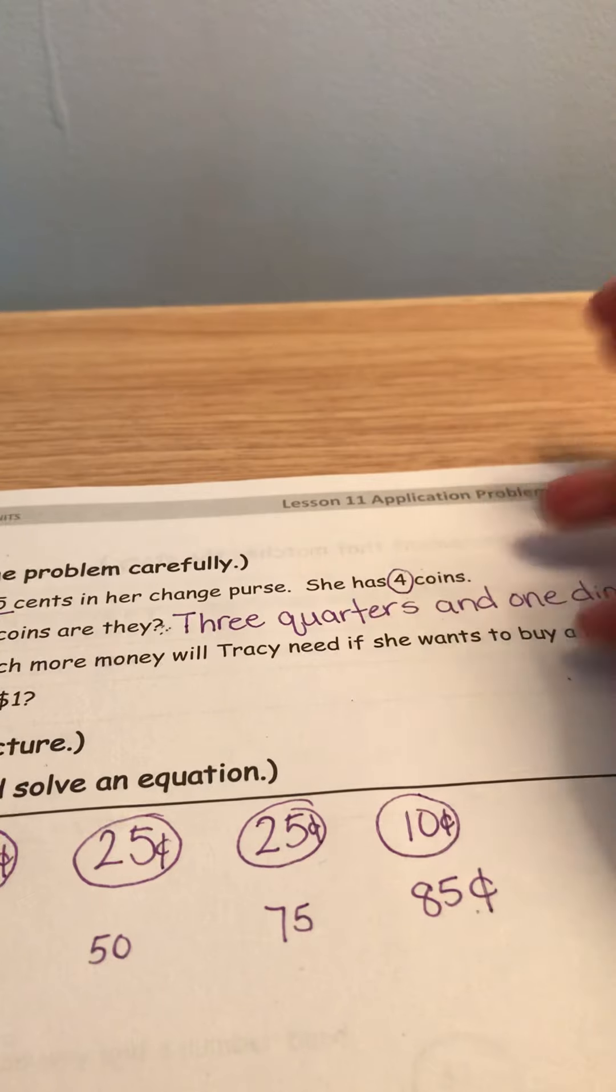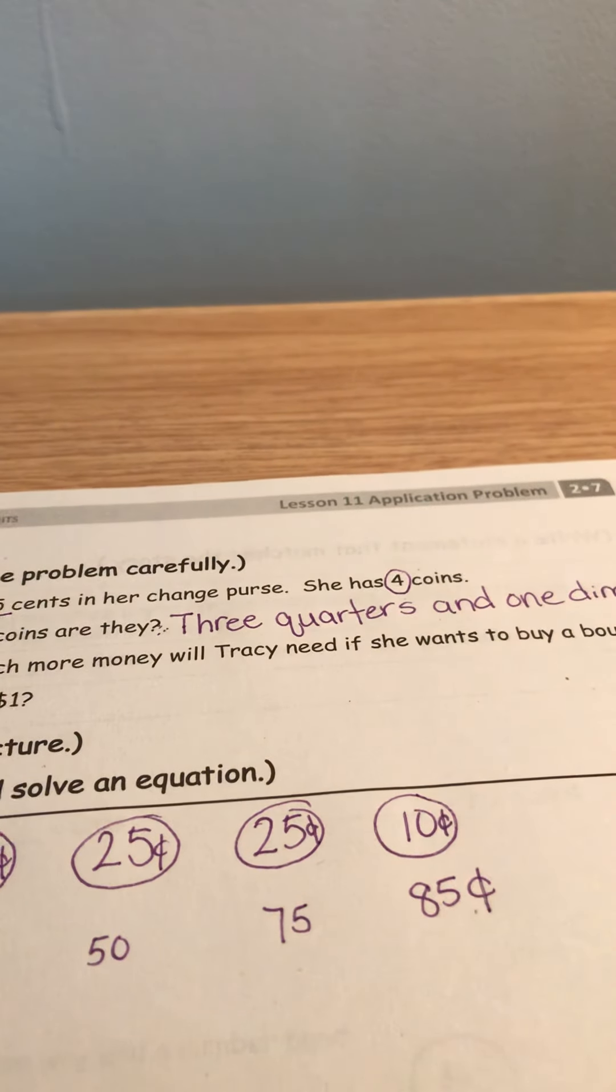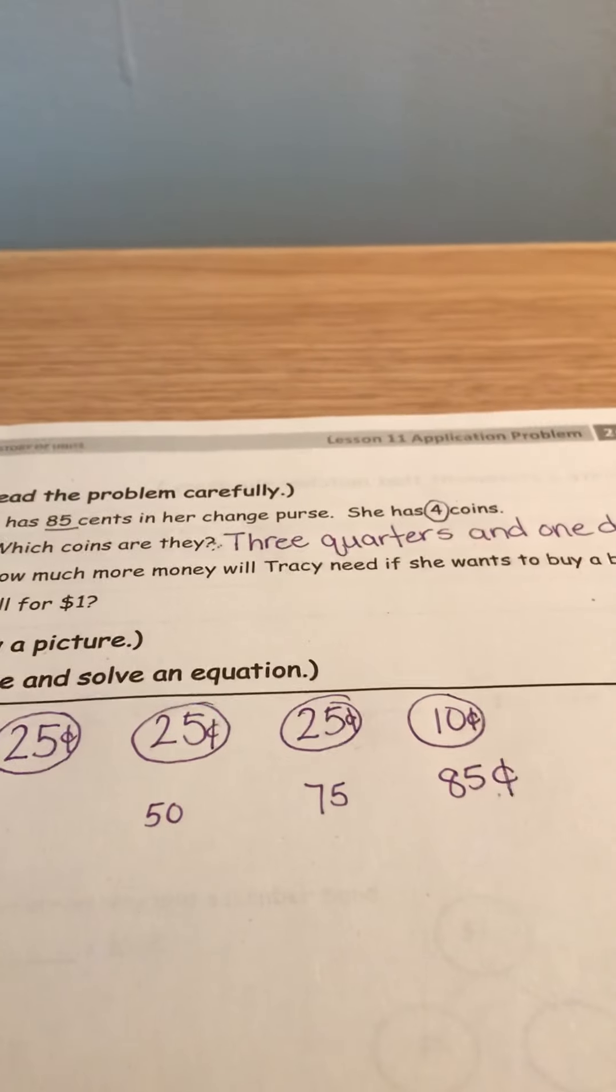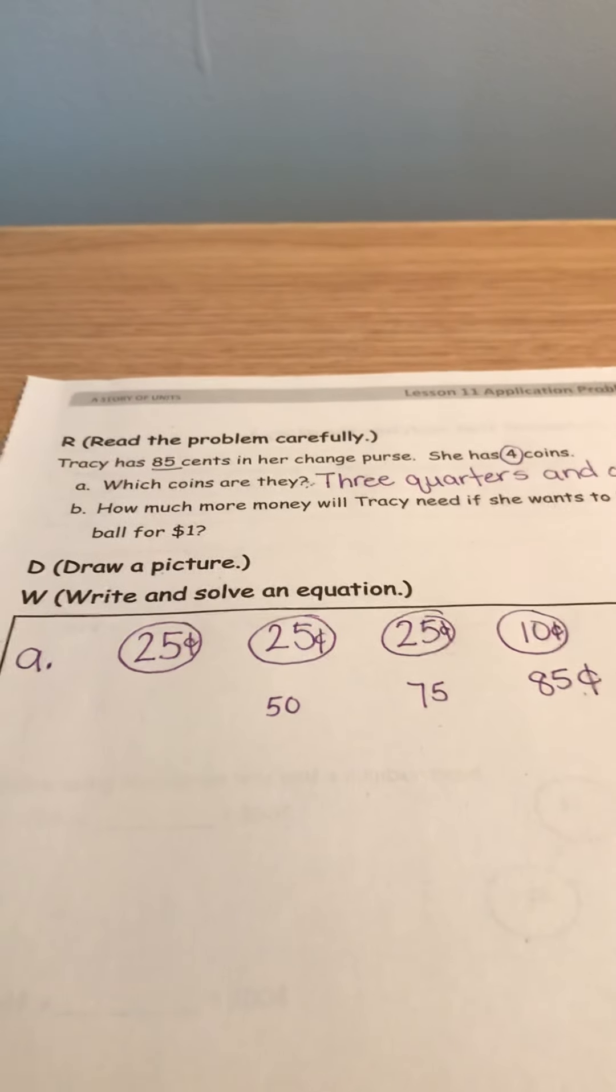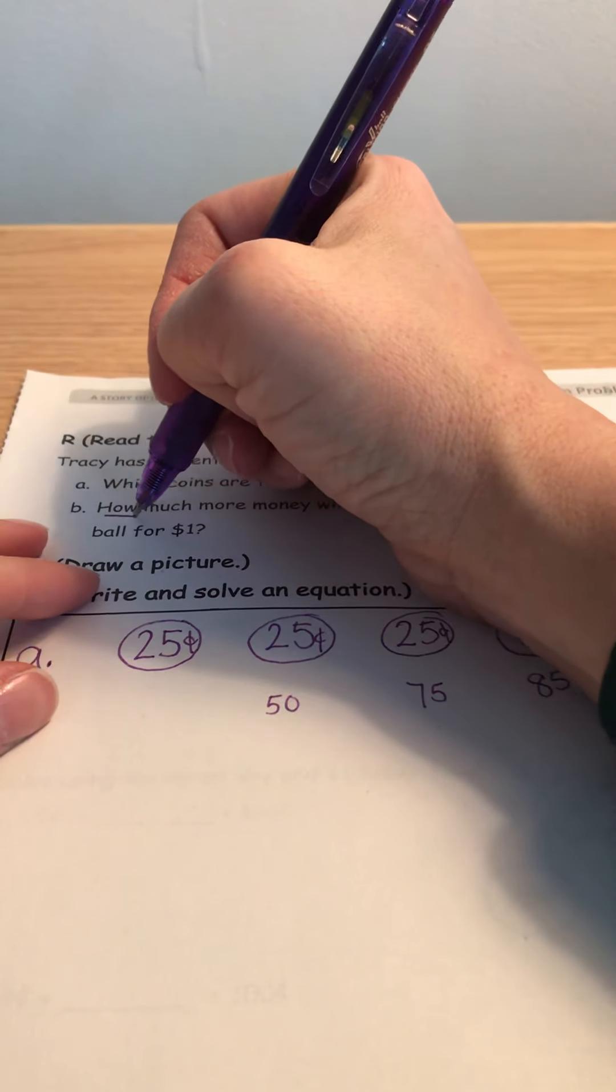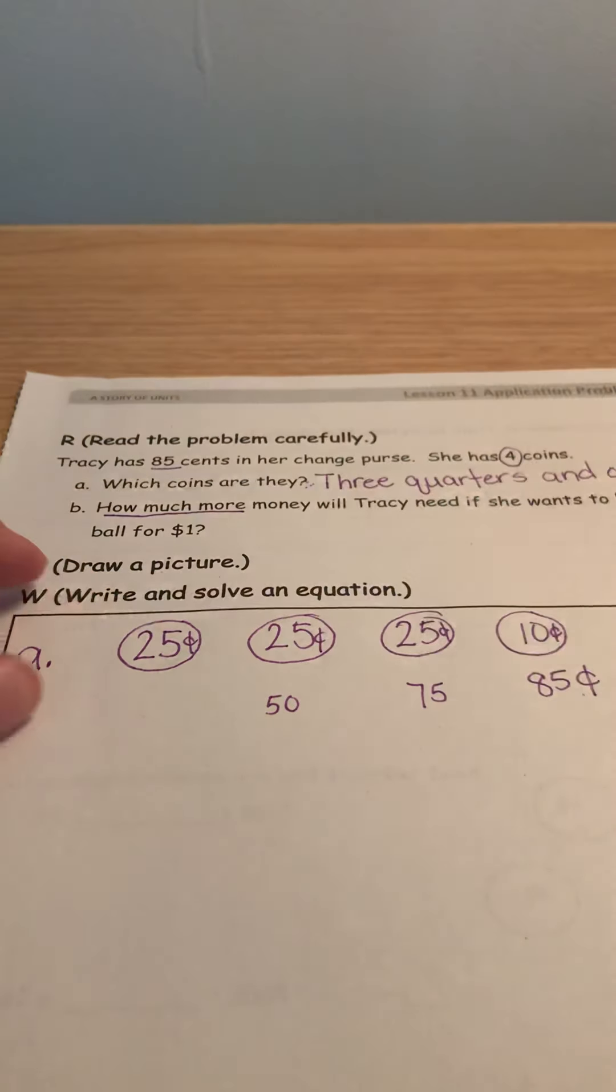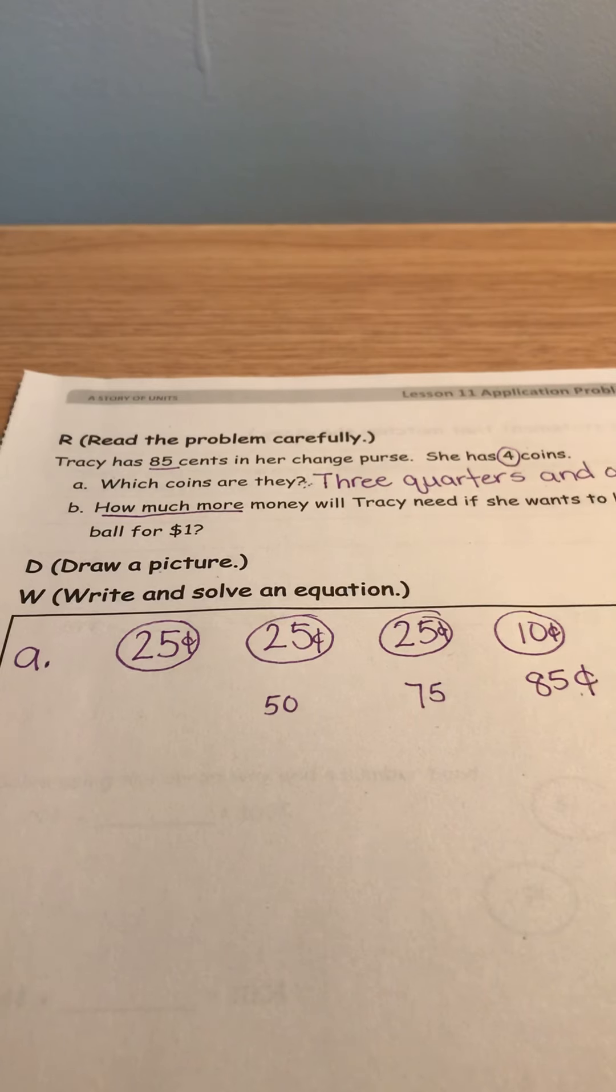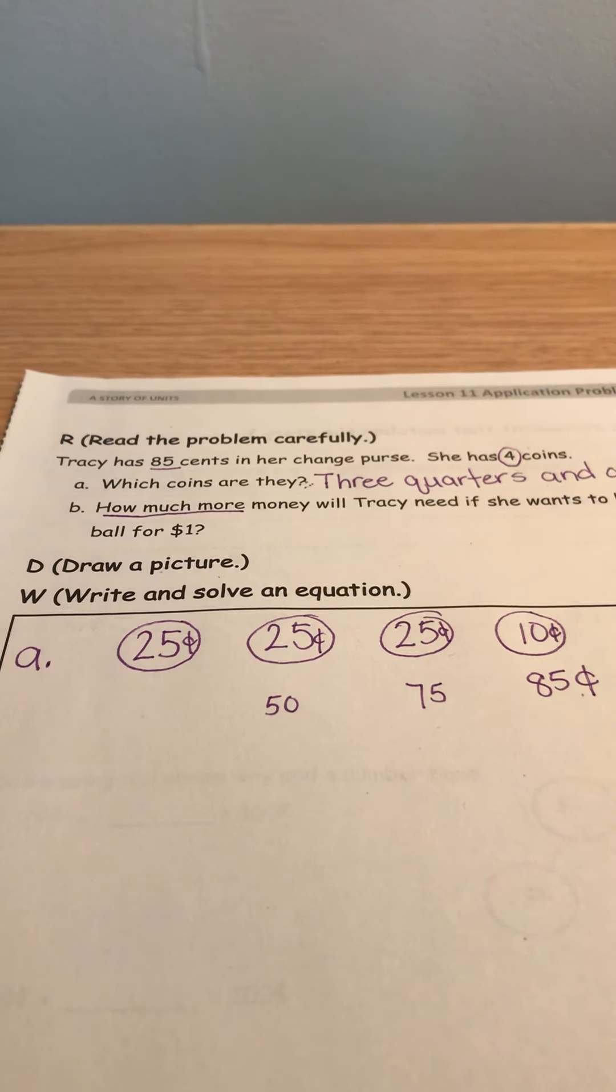I don't know why I put a period here. Okay, let's keep going. It says, how much more money will Tracy need if she wants to buy a bouncy ball for $1? Okay, remember that how much more is a good indicator. That's a big clue for us.